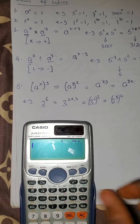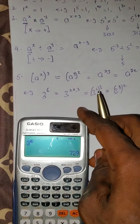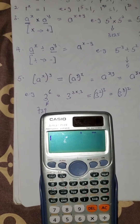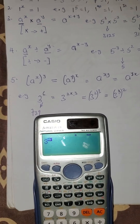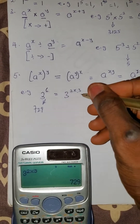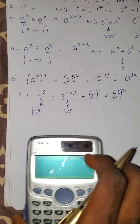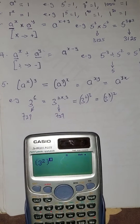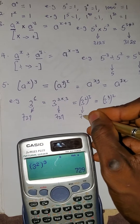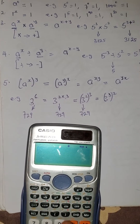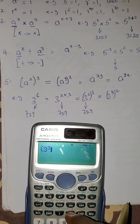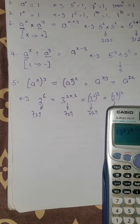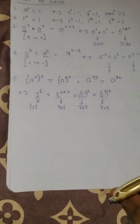Pressing these on the calculator: 3 raised to the power 6 gives 729. 3 raised to the power 2 times 3 also gives 729. The bracket of 3 raised to the power 2, close bracket, raised to the power 3 is still 729. And the bracket of 3 raised to the power 3, close bracket squared is still 729. They all have the same value, confirming the left side equals the right side.